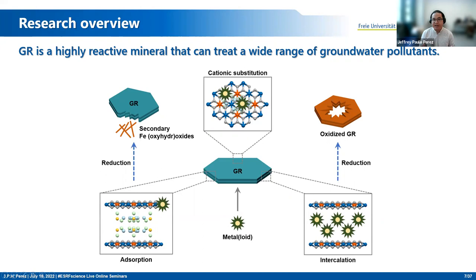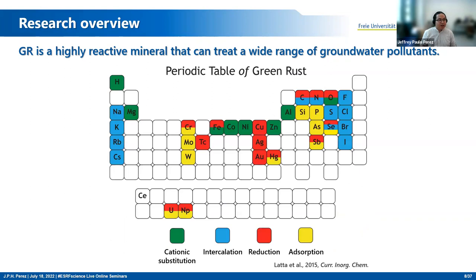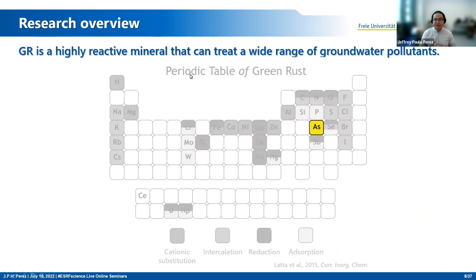Because green rust contains both iron(II) and iron(III), it can also participate in redox reactions. In some cases, it is able to reduce contaminants by either fully oxidizing its structure or by forming secondary iron hydroxides, thereby converting the toxic contaminant to its less toxic form. Here we just have the periodic table of green rust, which shows all the various elements that have been reacted with green rust. For my research, I chose to focus on arsenic.